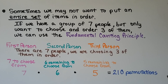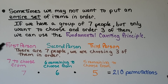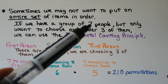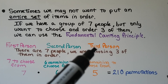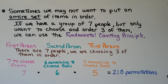Sometimes we may not want to put an entire set of items in order. If we have a group of seven people but only want to choose in order three of them, we can use the fundamental counting principle. It's almost like choosing teams for a baseball game — team leaders take turns picking, and every time they choose, the group becomes one smaller. So the first person has seven people to choose from; when choosing the second, there are only six remaining; and when choosing the third, only five remain. So we have seven times six times five, which equals 210 permutations.